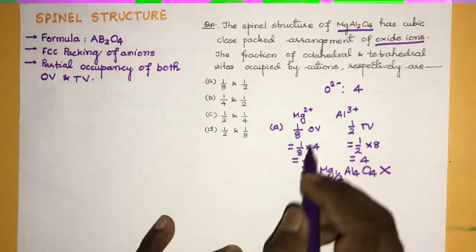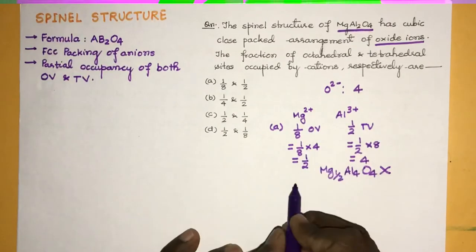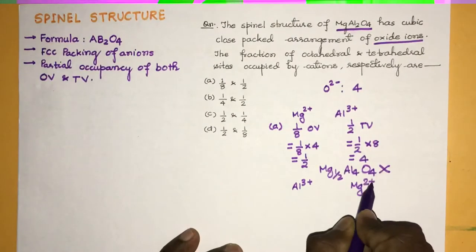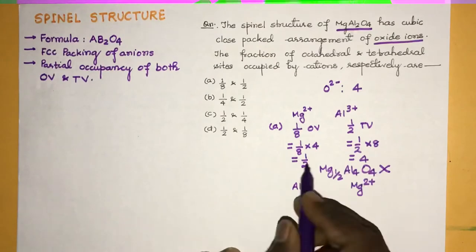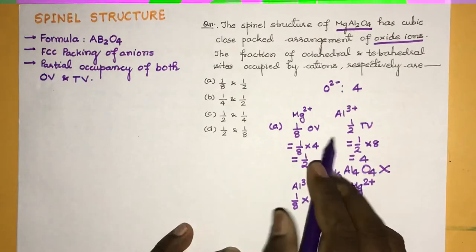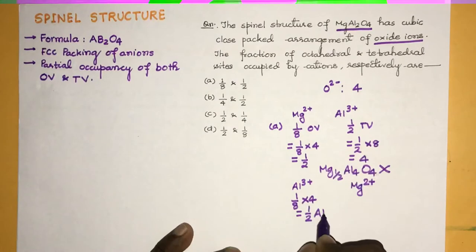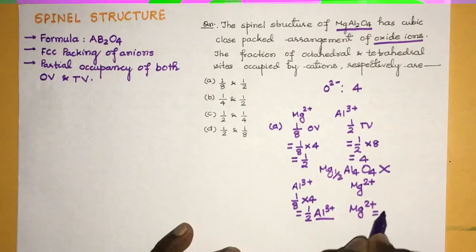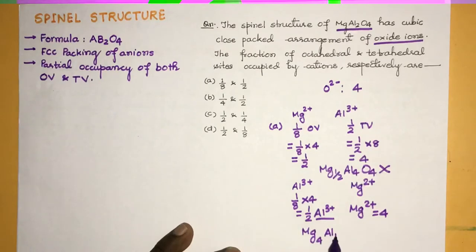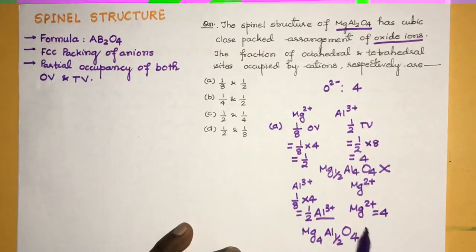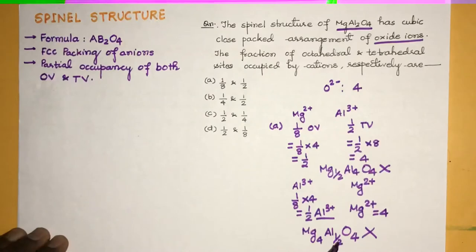Now if we interchange — if Al3+ occupies the octahedral voids and Mg2+ occupies the tetrahedral voids — then 1/8 × 4 gives 1/2 for Al3+, and Mg2+ becomes 4. That gives the formula Mg4Al(1/2)O4, which again does not satisfy the required formula MgAl2O4. This is also incorrect.